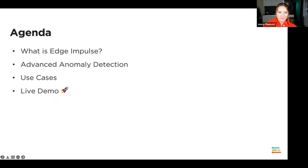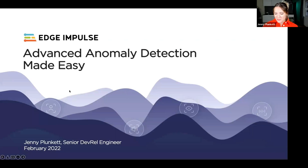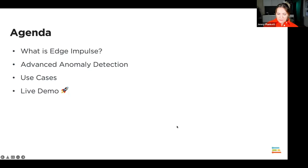Hi everybody. Thank you for the introduction, and thank you for having me again. Today I'll be talking about Edge Impulse and how we can make advanced anomaly detection really easy using the Studio and supported hardware, or any type of microcontroller or Edge device you'd like to use to deploy this model. The agenda covers: what is Edge Impulse, why is it valuable for TinyML, how can we do advanced anomaly detection easily, use cases, and a live demo.